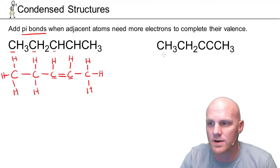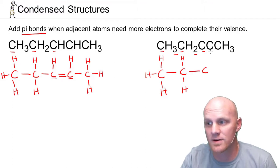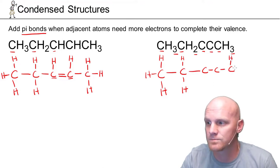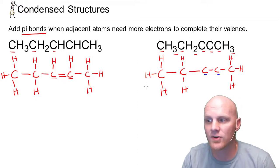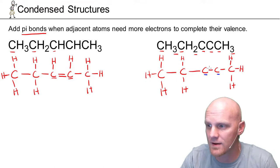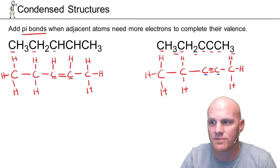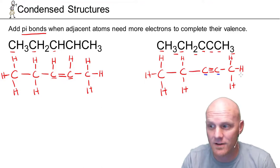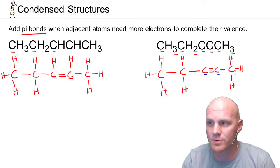We see that these two carbons in the middle only have three bonds — they don't have a filled octet, they both need one more bond. Two adjacent atoms that both need one more bond: the easy solution is to make a double bond, add that pi bond. For a triple bond example: if after adding one pi bond both carbons still only have three bonds, you add a second pi bond for a triple bond. This is how you infer double and triple bonds from condensed structures.